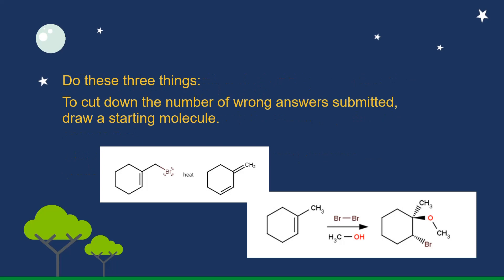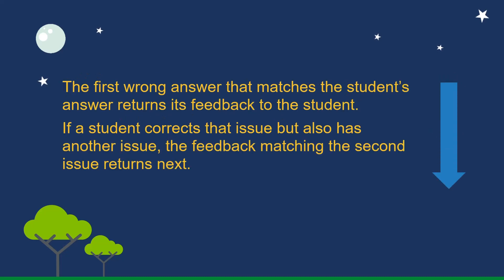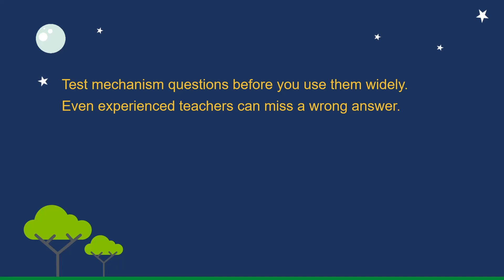Do these three things. To cut down the number of wrong answers submitted, draw a starting molecule. Add the most common wrong answer first, or reorder wrong answers so students will correct their most basic misconceptions first. The first wrong answer that matches the student's answer returns its feedback to the student. If a student corrects that issue but also has another issue, the feedback matching the second issue returns next. Test mechanism questions before you use them widely. Even experienced teachers can miss a wrong answer.